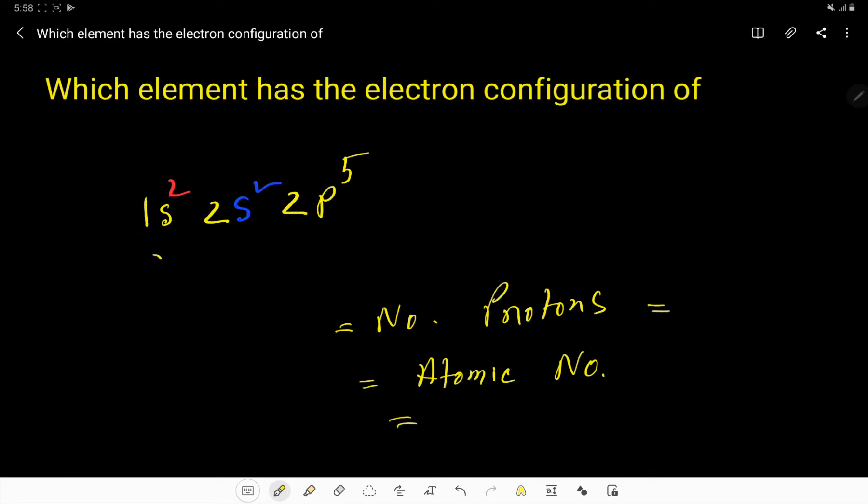Here we have 2, then 2, then 5. So 2 + 2 = 4, 4 + 5 = 9. We have 9 electrons. We know that in a neutral element or atom,